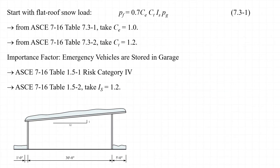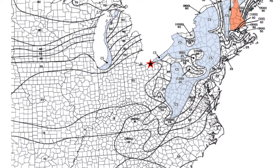The last variable in our flat roof snow load equation is the ground snow load, P sub g. In this example, I'll use the map snow loads from Chapter 7 of the 2016 ASCE 7 standard. Looking at the map for the northeastern United States and Midwest, Cleveland is just south of Lake Erie in an area designated for a ground snow load of 20 pounds per square foot.